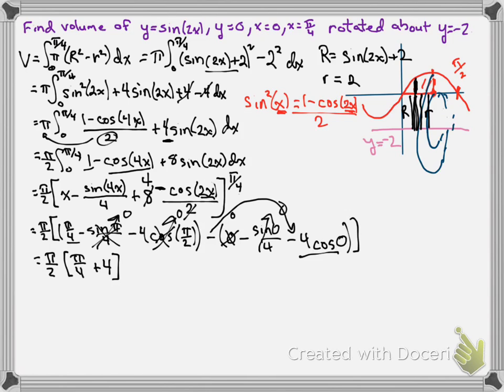And we might take this one step further. Distribute this term here. That'll give us pi squared over 8, and here will give us plus 2 pi. And there's a nice exact answer to this definite integral.